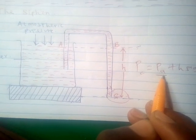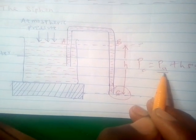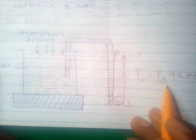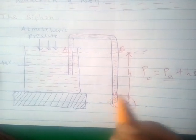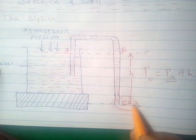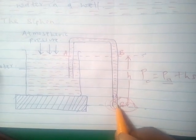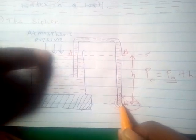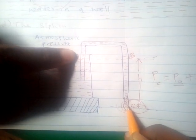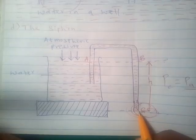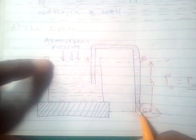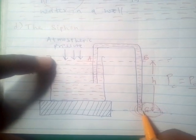There are conditions which must be satisfied for siphoning to work. First, end C of the tube must be at a lower level than the level of the liquid at point A — that is, one end of the tube must be at a greater depth than the surface of the liquid.